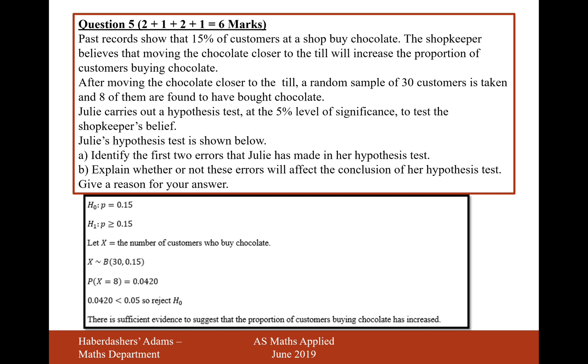Identify the first two errors that Julie has made in her hypothesis test. So the first mistake is going to be on line 2. It's not that the probability is greater than or equal to 0.15, it should be greater than 0.15. Just greater than, but this won't affect the result of the hypothesis test. So for part B, this won't affect result. What you might want to put down in your answers is on line 2, this should be the answer and it won't affect the result.